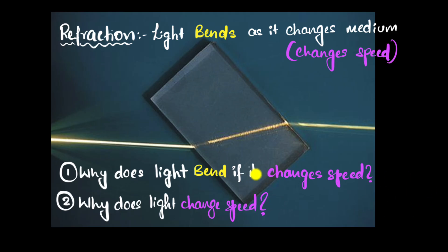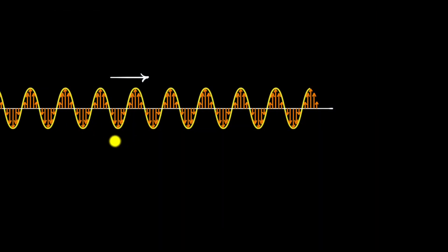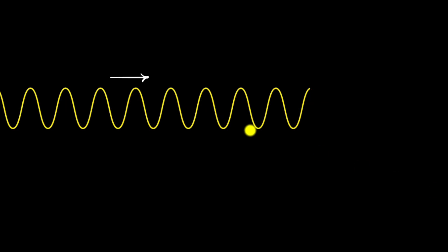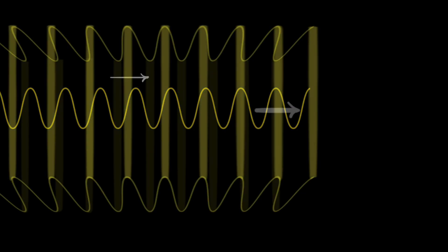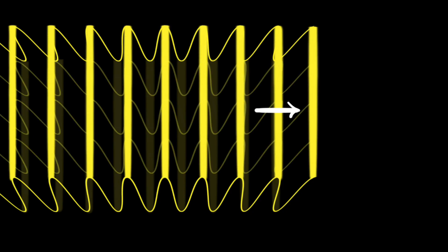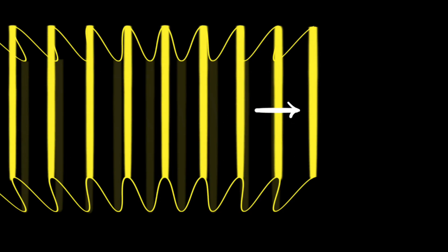Let's start with the first question: why does light changing speed imply bending? To answer this, let's remember our model of light. Light is an electromagnetic wave with oscillating electric fields — you can think of these as electric field vectors — and also magnetic fields. This light is a wave in three dimensions, so if you were to look from the top, you can imagine a lot of these waves all stacked up. That's how you can visualize this wave in 3D.